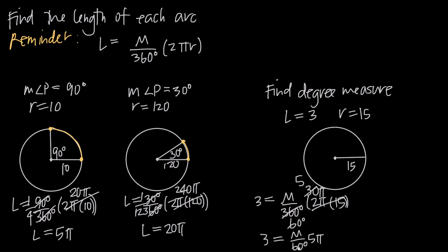Let's go ahead and multiply both sides by 60 degrees to get it out of the denominator. We end up with 180 degrees equal to M times 5π. If we divide both sides by 5π, we get 180 degrees divided by 5, which gives us 36.